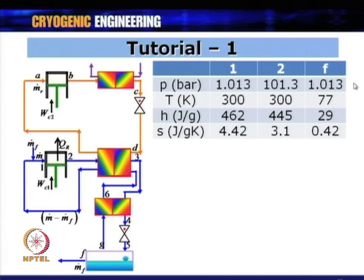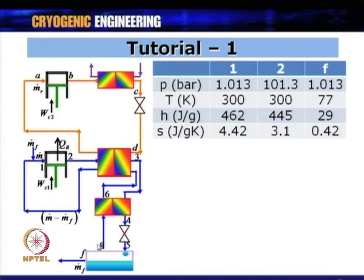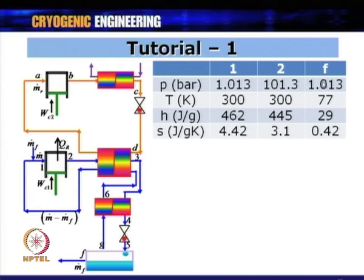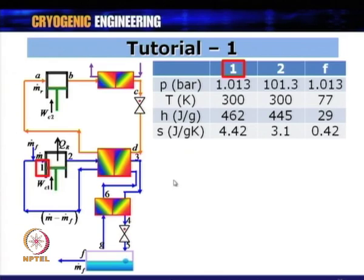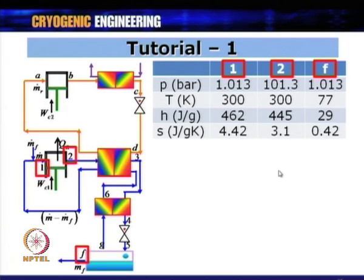These enthalpy and entropy values are read from a temperature-entropy chart for nitrogen. The table should always be prepared first to avoid calculation errors. For the pre-cooling circuit using R134A, state points A, B, and C are similarly identified, with enthalpy values at pressures of 1 bar and 10 bar.